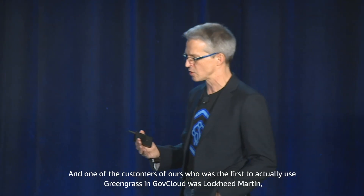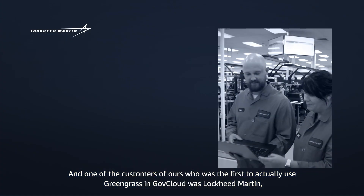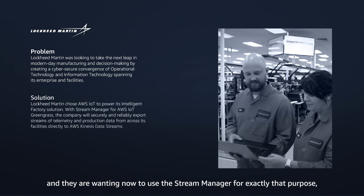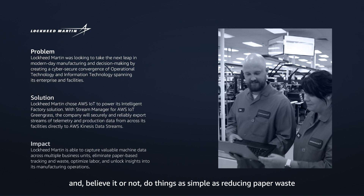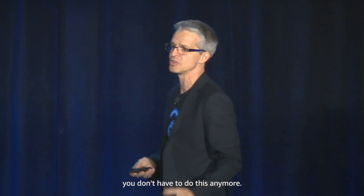One of our customers who was the first to actually use Greengrass in GovCloud was Lockheed Martin, which you can see on the slides. They built their local technology based on AWS IoT Greengrass and now want to use the stream manager to stream all information coming from their different facilities into their cloud backend to optimize local processes — and do things as simple as reducing paper waste when you have manual processes, because now you can get all this information in one place.